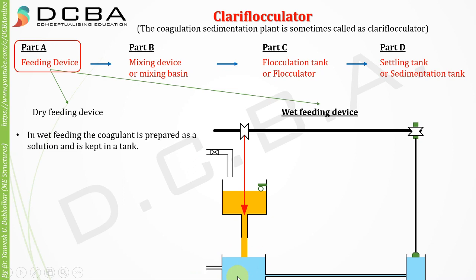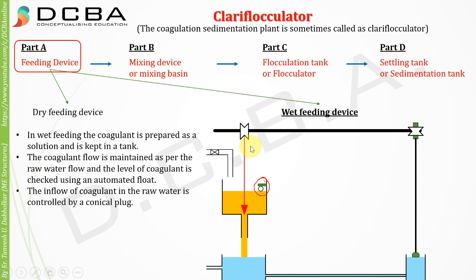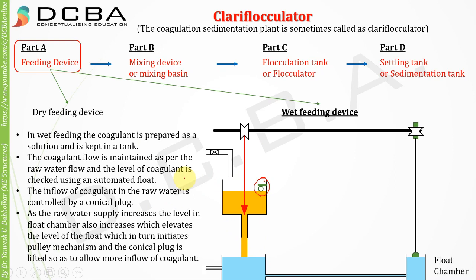In wet feeding, the coagulant is prepared as a solution and kept in a tank. The coagulant flow is maintained as per the raw water flow, and the level of coagulant is checked using an automated float. The inflow of coagulant to the raw water is controlled by a conical plug. As raw water supply increases, the level in the float chamber rises, elevating the float, which initiates the pulley mechanism and lifts the conical plug to allow more coagulant inflow.